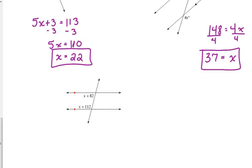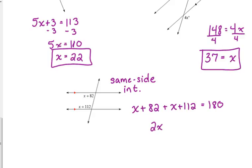Last example here. What do we call those two angles? Same side interior. They're on the same side of the transversal and they're inside the parallel lines. What did we say about same side? Same side have the sum of 180. So x plus 82 plus x plus 112 is equal to 180. Add the two x's. So we get 2x. Add 82 and 112. That's 194. So we subtract 194. 2x is equal to negative 14. So divide by 2. x is equal to negative 7.